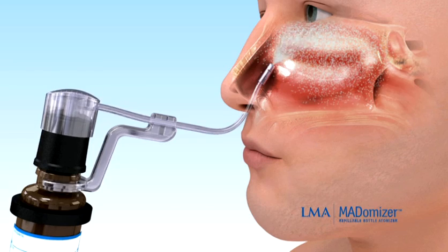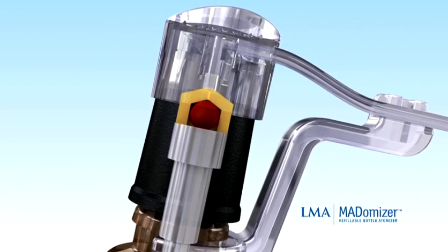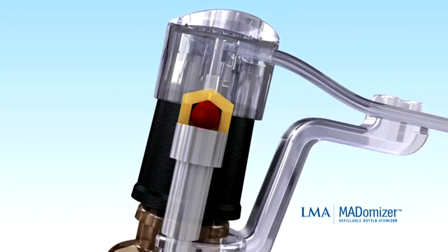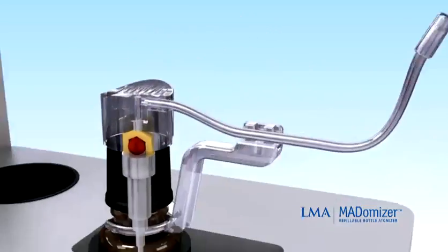Each pump delivers exactly 0.1 milliliter of drug as a fine atomized mist of approximately 30 to 50 microns. There are 200 pumps per full bottle. The unique one-way check valve ensures unidirectional flow, preventing any risk of internal device contamination.